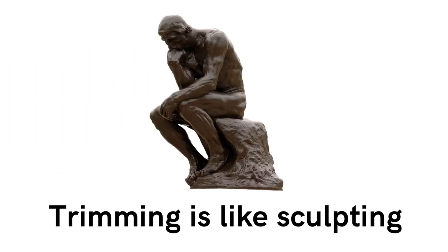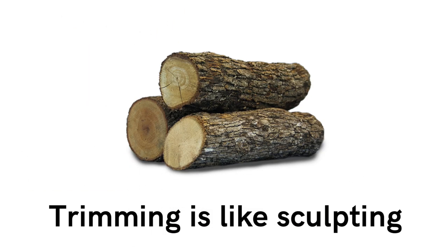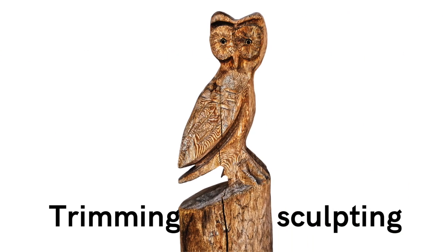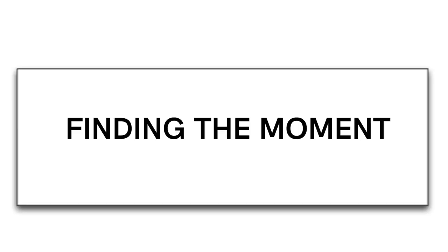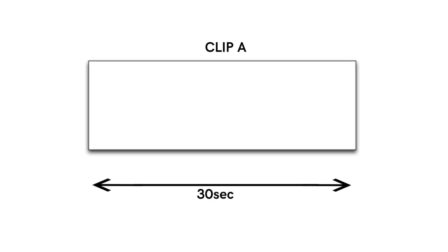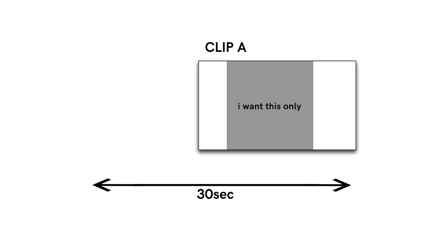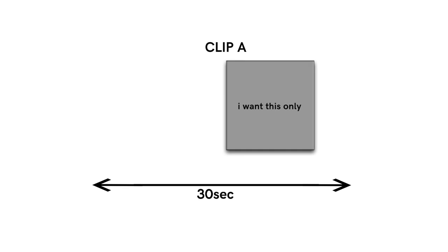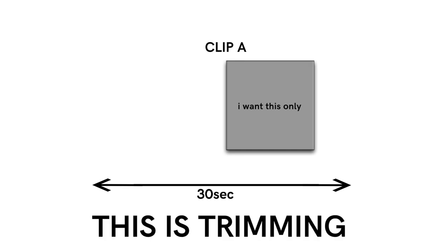First off, trim. Trimming a clip is like sculpting out of a log of wood. In its raw form it's a clunky chunk of material, but within it lies a beautiful work of art. You need to trim away the excess to get to the good bits. In video I call this finding the moment. A moment is usually only a few seconds long at most. If you have a 30 second clip and you only want a piece of it from the centre, you need to trim back from the front and at the back to only leave the part you want. This is known as trimming.